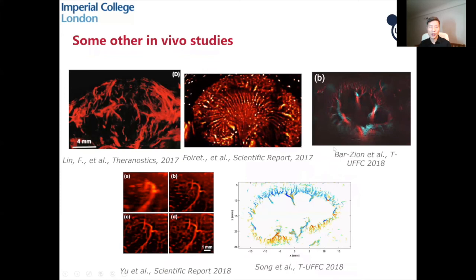There are also a number of other in vivo super-resolution studies. These are just examples: a tumor model, a rat kidney, and an atherosclerotic model of the aorta showing micro vessels on the wall of an abdominal aorta.